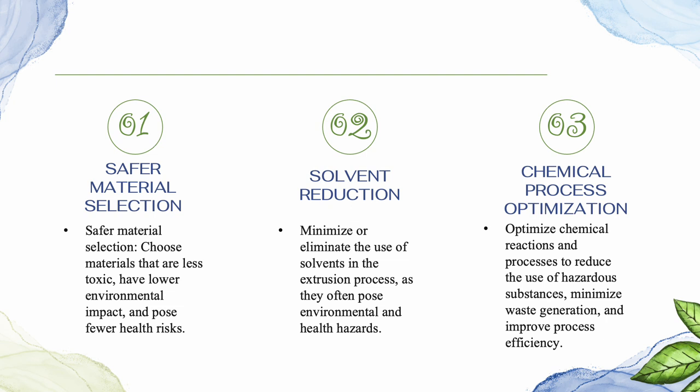Last but not least, by chemical process optimization. Optimize chemical reactions and processes to reduce the use of hazardous substances, minimize waste generation, and improve process efficiency. This can involve adjusting reaction conditions, catalyst selection, or exploring alternative reaction pathways. By implementing these green chemistry strategies, manufacturers can minimize the use of hazardous substances, reduce waste, conserve resources, and mitigate the environmental impact of the extrusion process.